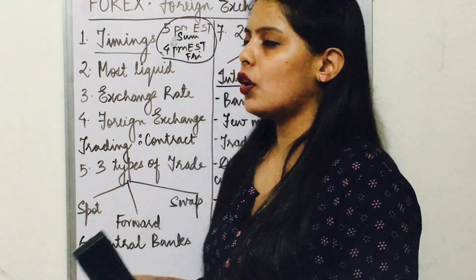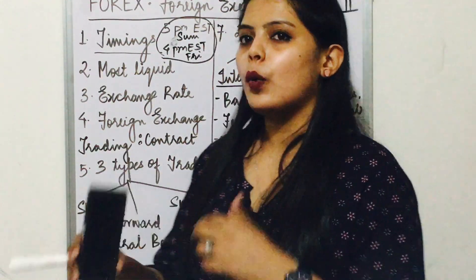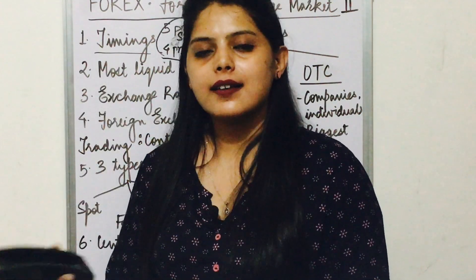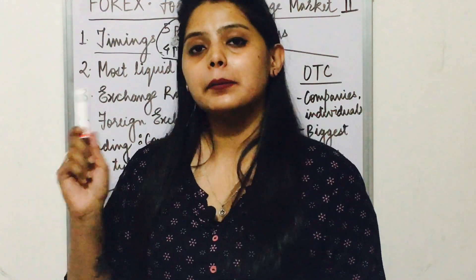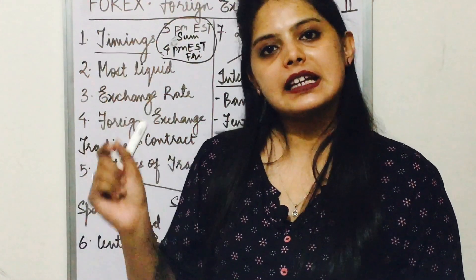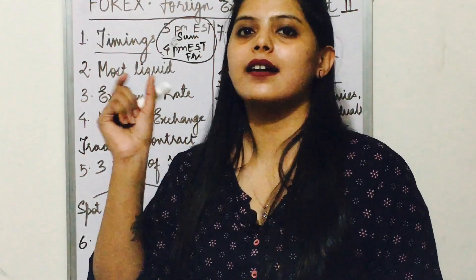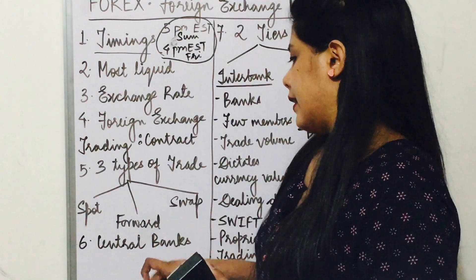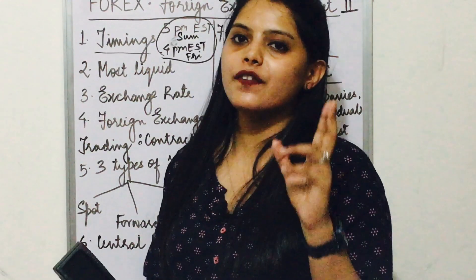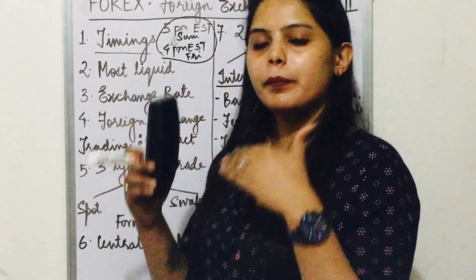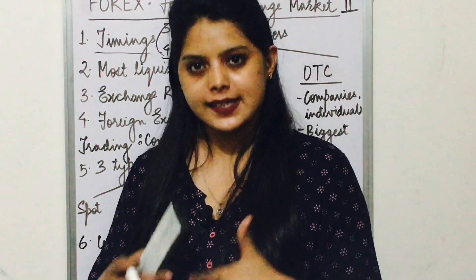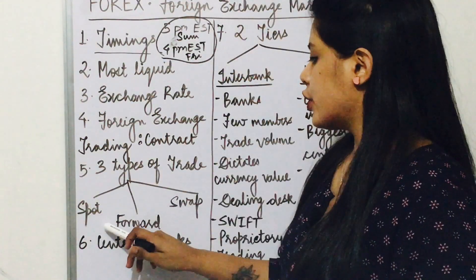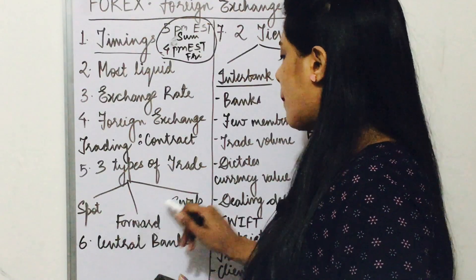Next is forward. When there is an agreement between two parties to sell a currency on a future specific date at a determined price — meaning trading will happen on a future basis at that price — that is forward trade. Third is swap. Swap is a combination of spot and forward: buyers will buy on today's date, which is the spot date, whereas they will sell according to the forward trade. These two combinations together mean swap.